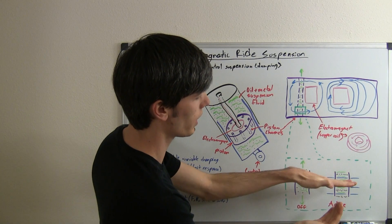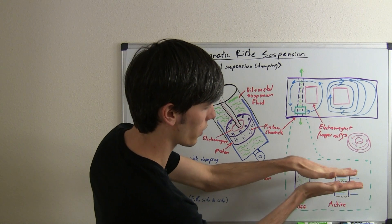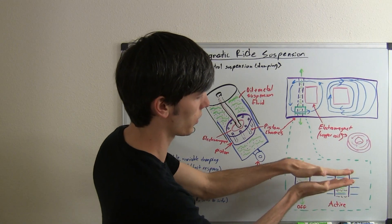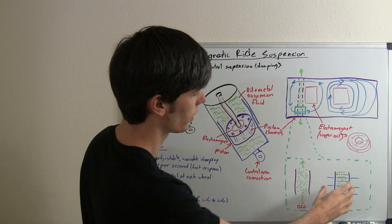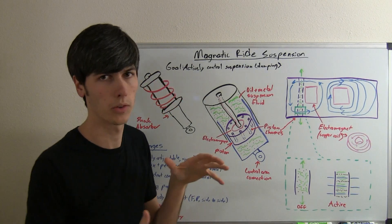So, the fluid is going to have a much tougher time moving through these layers of electromagnetic particles that you're kind of just holding in place. And so, the fluid is going to try and pass these and it's going to resist that because of this magnetic force. And so, what that does is it stiffens your suspension quite a bit.